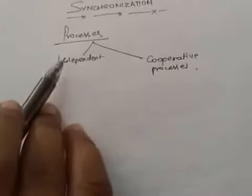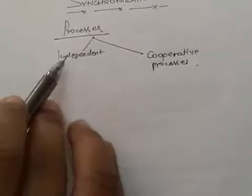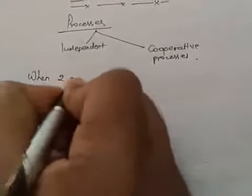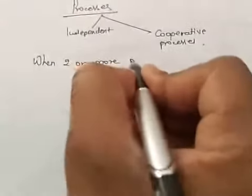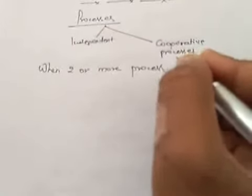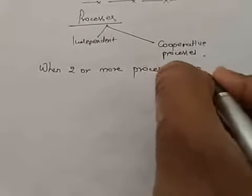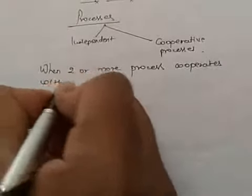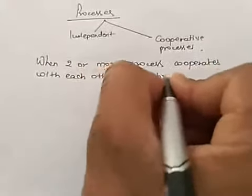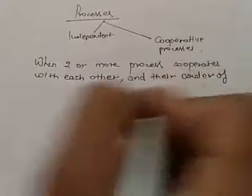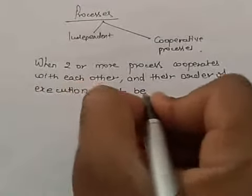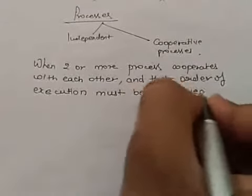Independent processes are processes which do not depend on each other. When two or more processes cooperate with each other, their order of execution must be preserved.